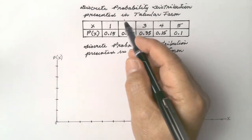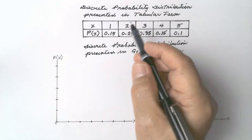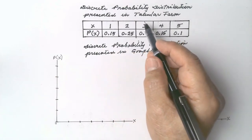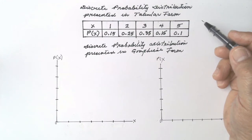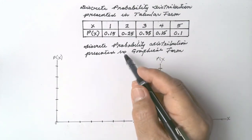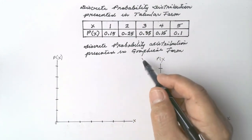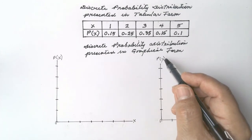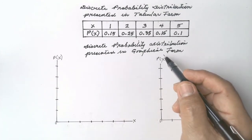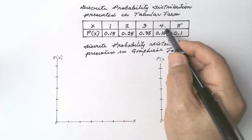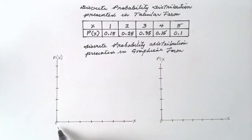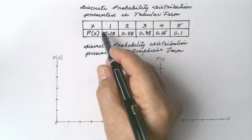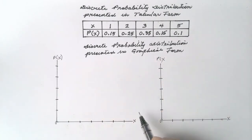Discrete probability distribution can be presented in tabular form similar to this. It can also be presented using graphical form. Let's do that and we are going to use this data. The horizontal axis is for the specific value.